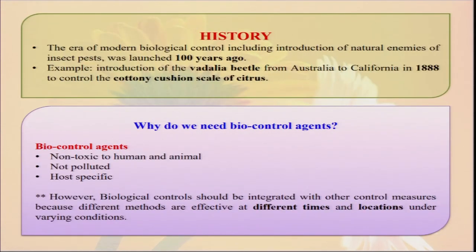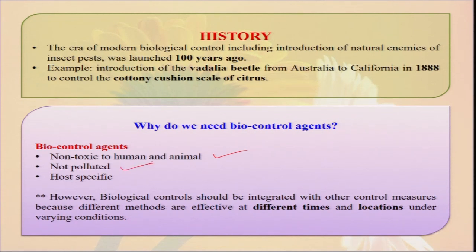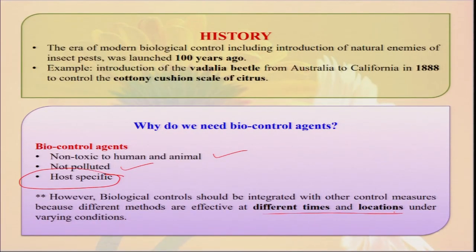The era of modern biological control was launched 100 years back with the introduction of the Vedalia beetle from Australia to California. Why do we need biocontrol agents? Because they are non-toxic to humans and mammals — they will not cause any health hazard for us. They are not polluting to the environment and are very much host-specific. Meaning whenever they will not get any food, they will not attack our beneficial microorganisms or beneficial insects. However, they cannot control alone — if you are only depending on the biological biocontrol method, probably you cannot control all the insect pests and diseases. So it should be integrated with other control measures and we have to use different types of botanicals.